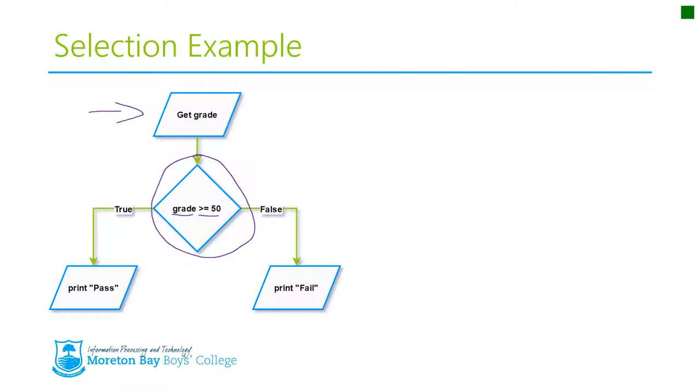If it is greater than or equal to 50, it's true, and therefore this path will be followed and it will print pass. If it's not greater than or equal to 50, so if this condition is not true, if it's false, then it'll come down this path and print fail on the screen.